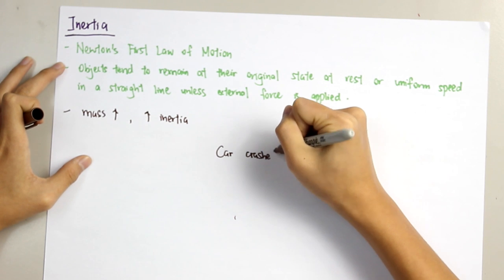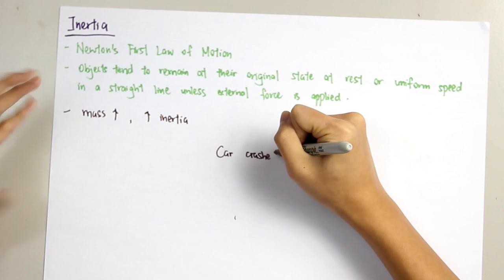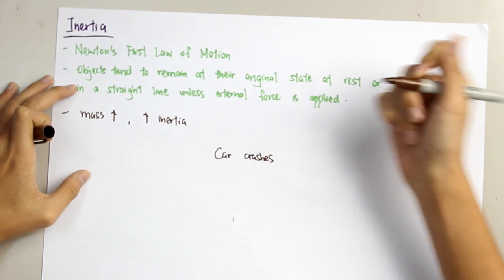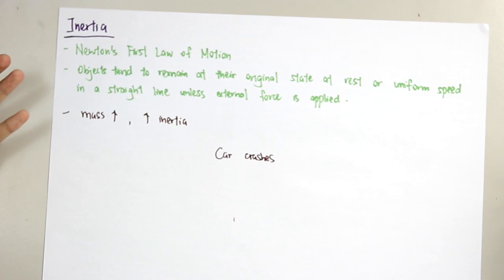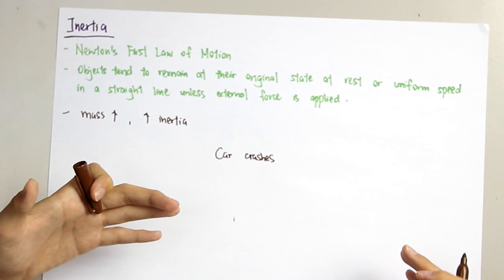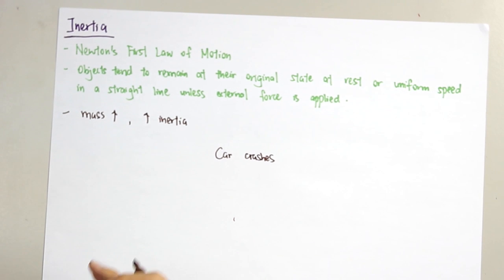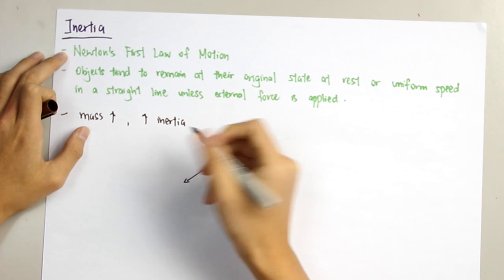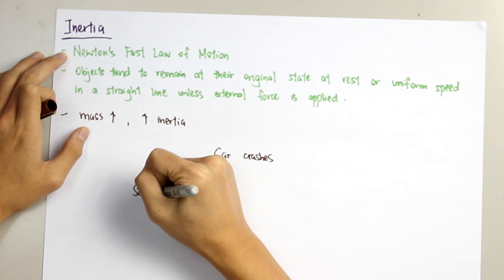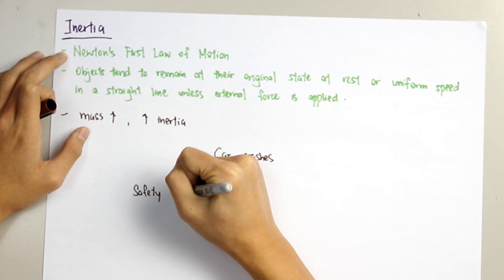There must be some ways to reduce the negative effect of inertia. During car crashes, the first thing you will face is you will be thrown forward. How to reduce this negative effect of inertia? The first thing you can do is wear a safety seatbelt.